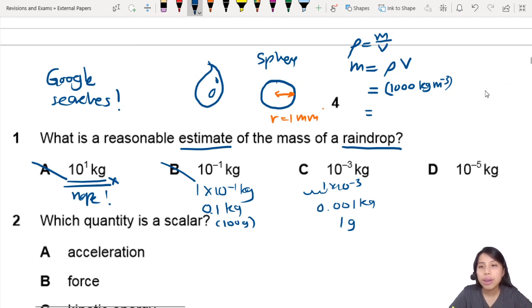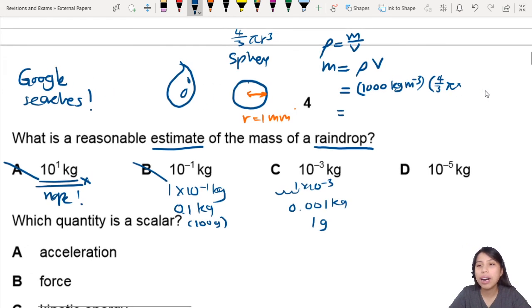Volume of a sphere will be 4 over 3 pi r cube. So I need to do 4 over 3 pi, then I write my r, which is 1 times 10. Oh, millimeter. So I need to do 10 to the power of negative 3 cube. There we go. Now let's calculate.